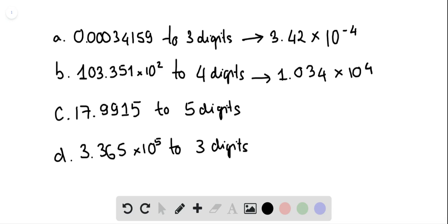This one to five digits, we have 1, 2, 3, 4, 5. So up to here, and because the one next to it is 5, this will become 2. So you're going to have 1.7992 times 10 to the 1.